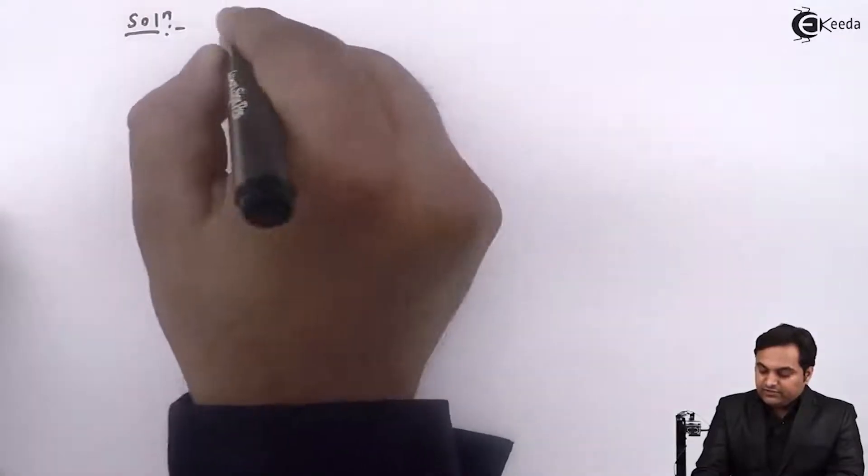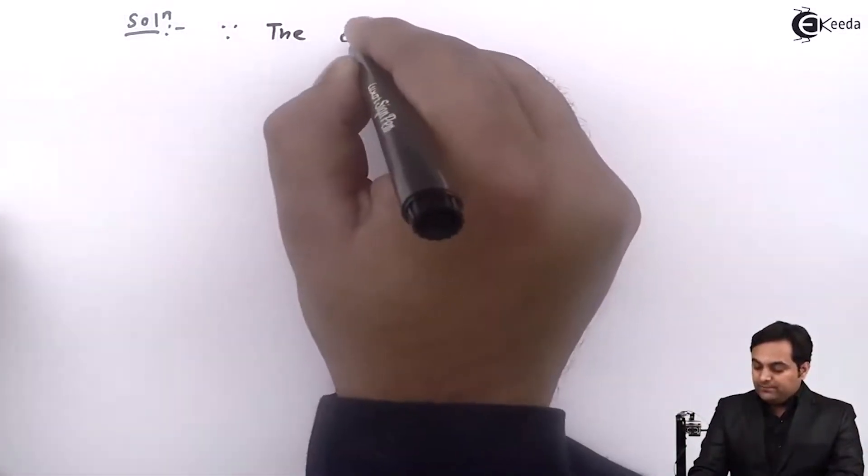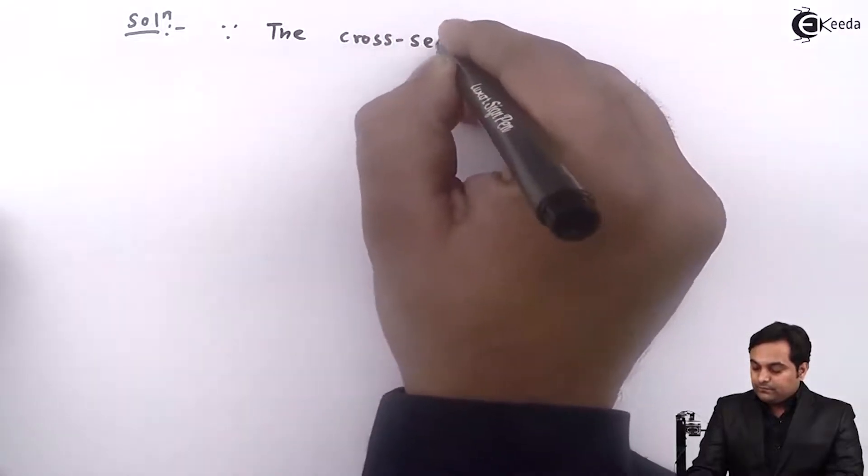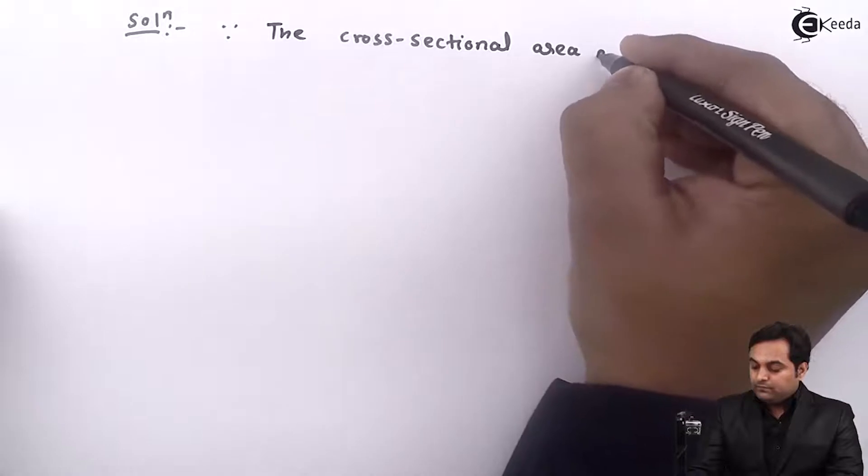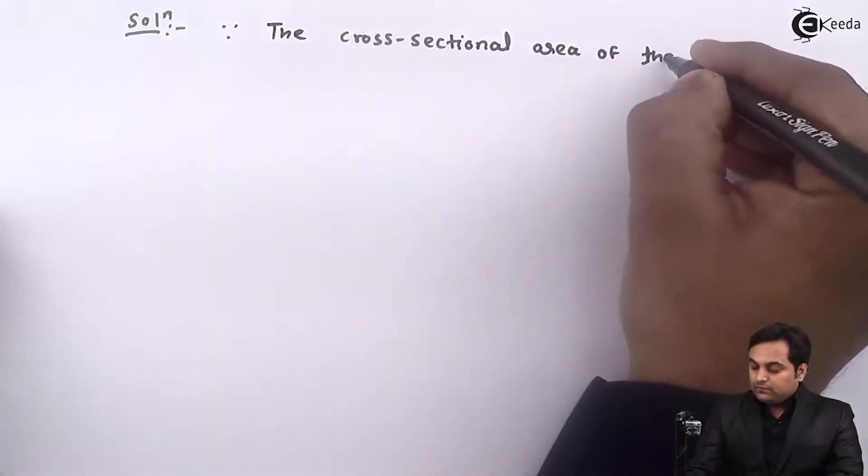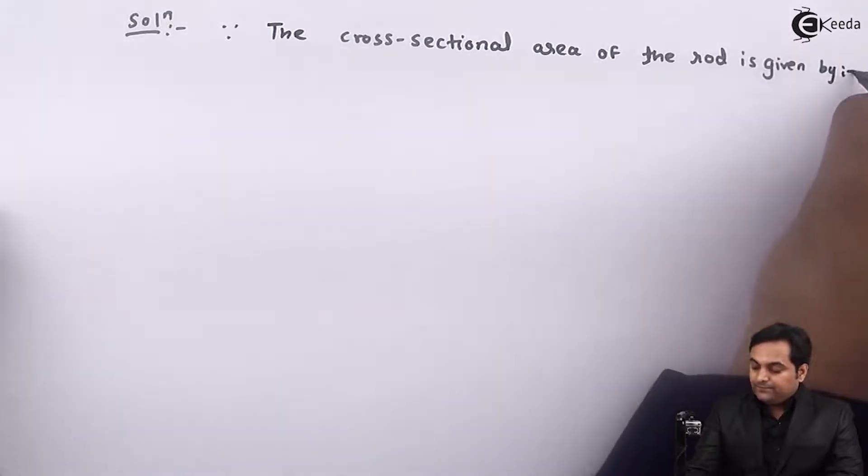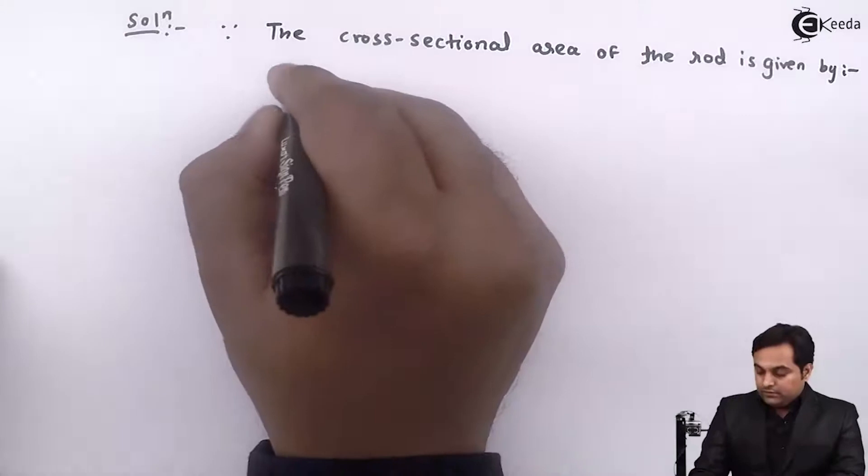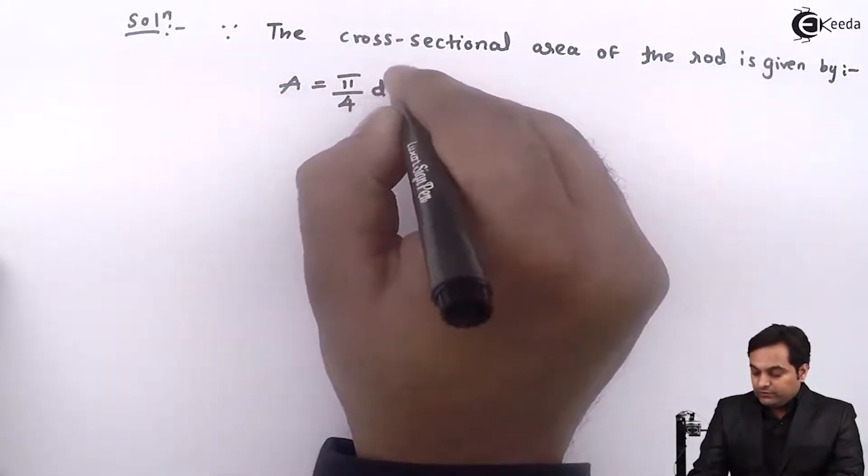In the solution part I will say that first, since the cross-sectional area of the rod is given by, cross-sectional area is circular, so it is pi by 4 d square.